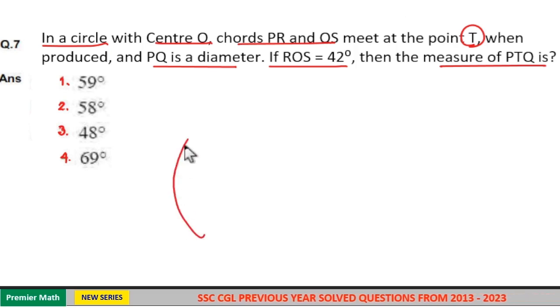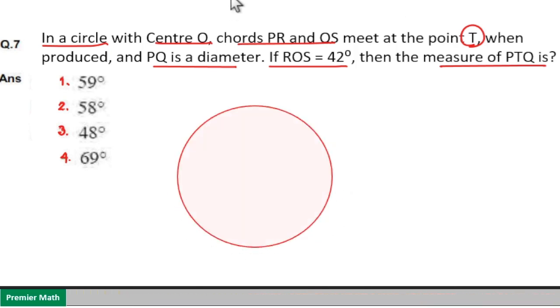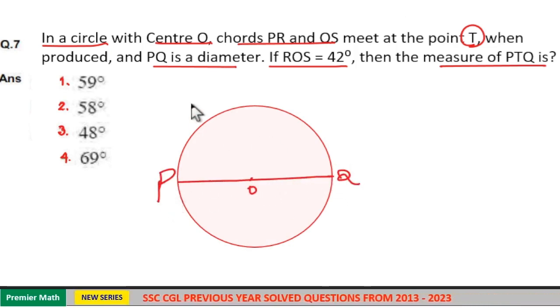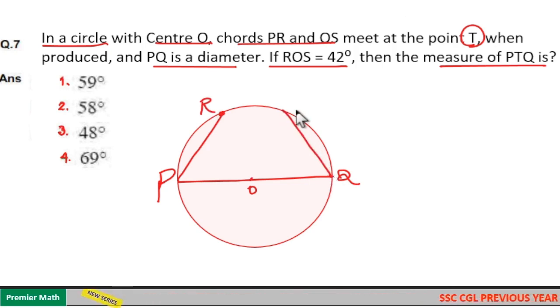Here this is the circle with center O and PQ is a diameter. Chords PR and QS meet at point T. So this is chord PR and this is chord QS.